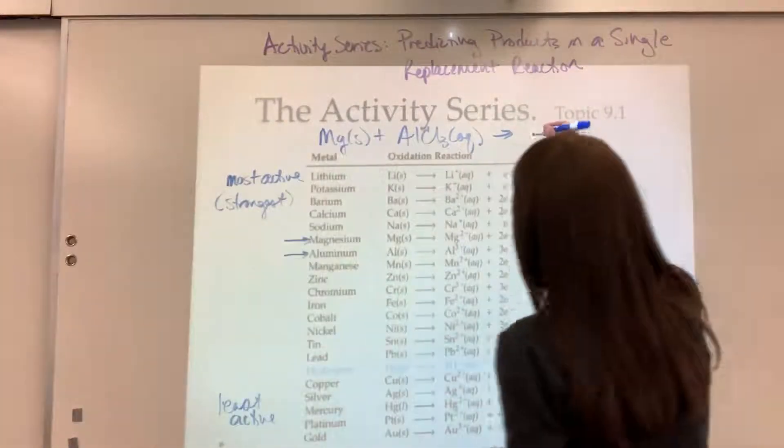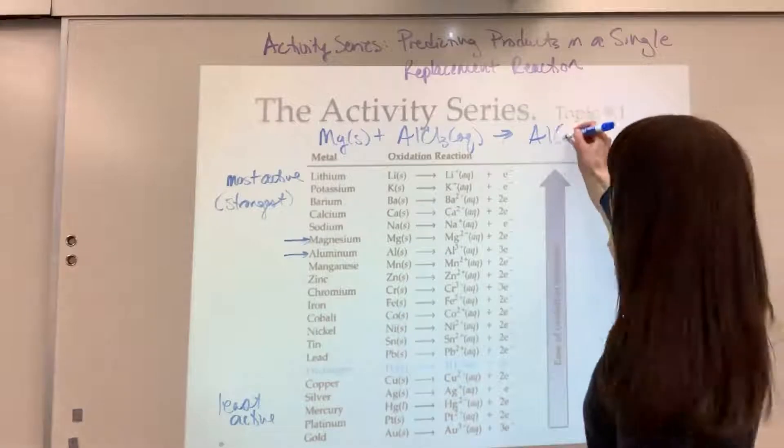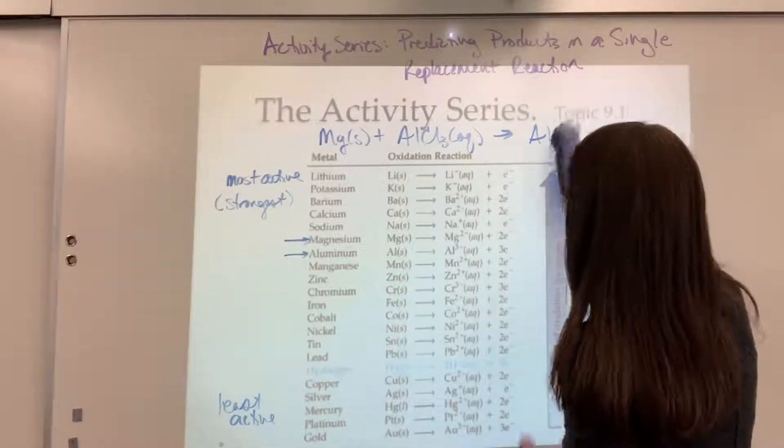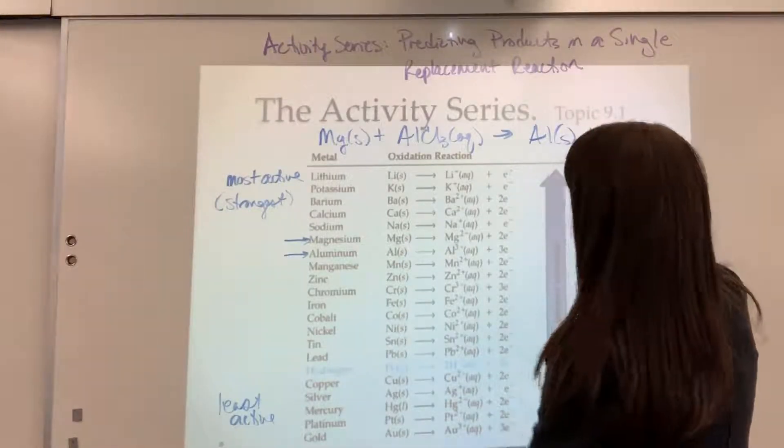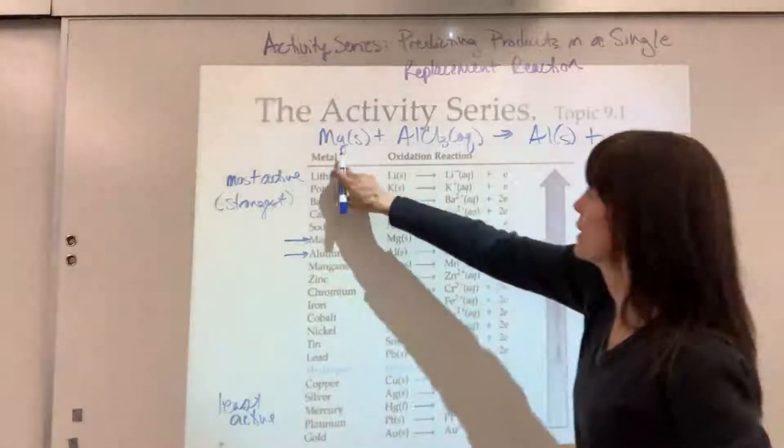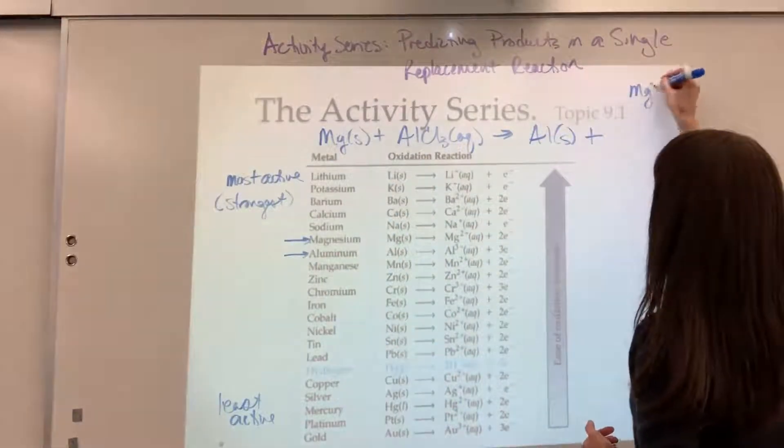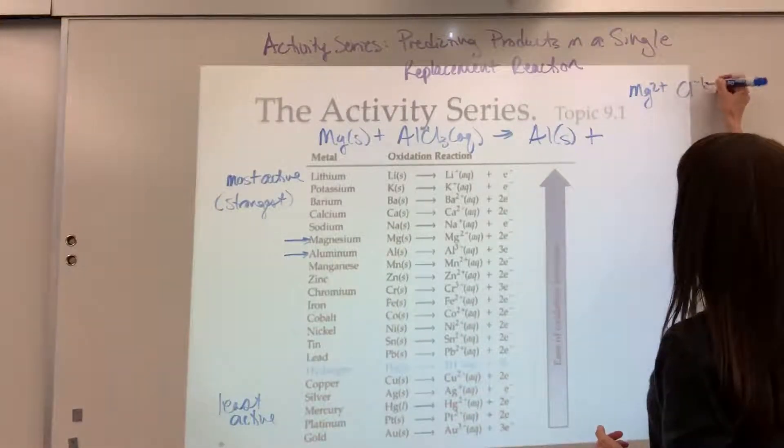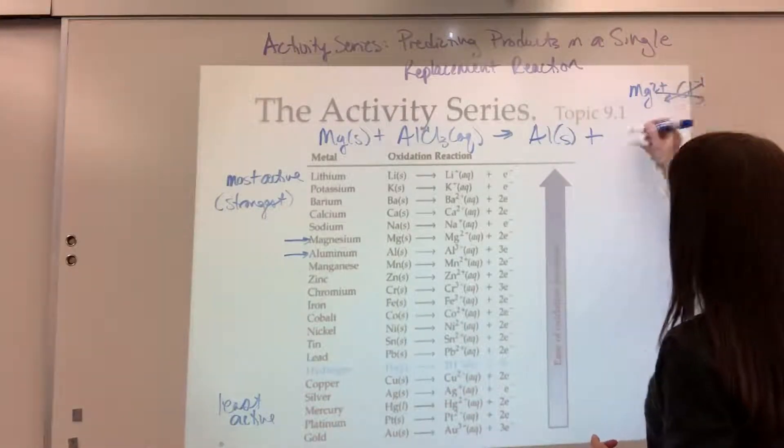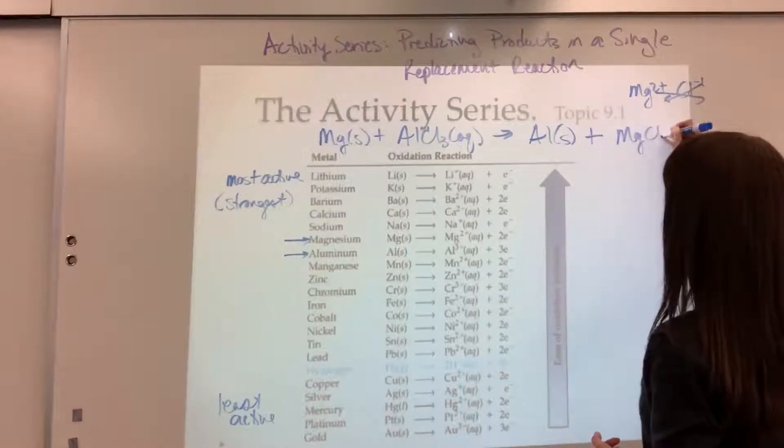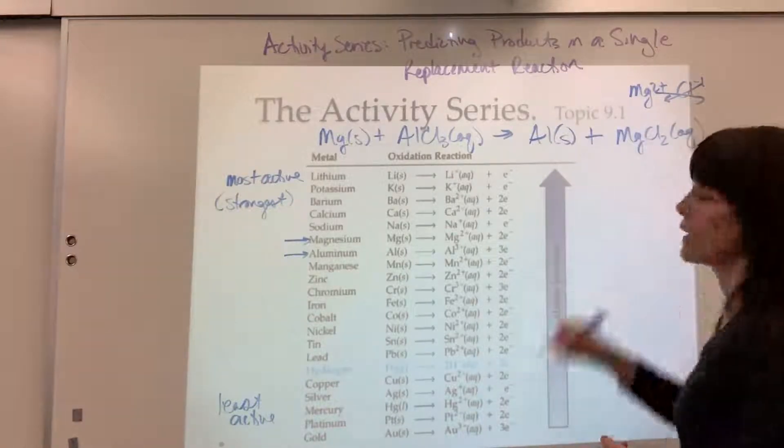The magnesium can kick the aluminum off. We are going to have aluminum by itself, that will be solid, plus the magnesium is going to go to the chlorine. Let's go to ions: Mg2+ and the chloride is -1. Cross down charges, we end up with MgCl2, and that will be aqueous.